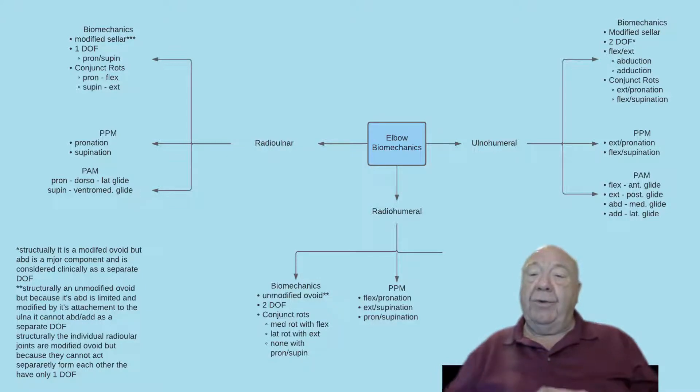So the passive physiological movement assessment of the ulnar humeral joint will be flexion-supination, which requires both movements to go to its full range, and extension-pronation. Now for abduction and adduction, you will assess abduction and adduction as a passive physiological movement.